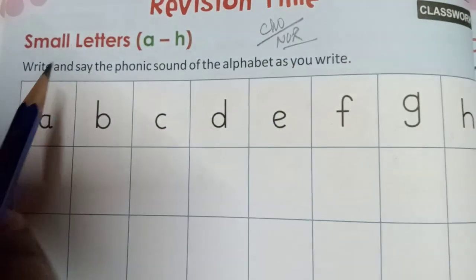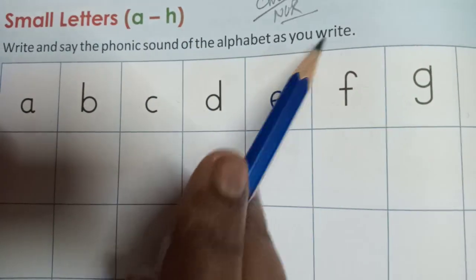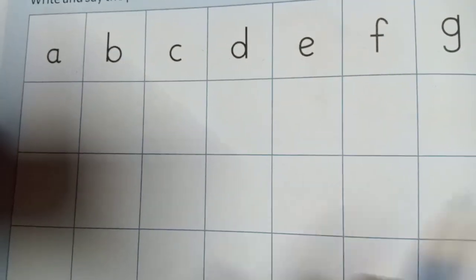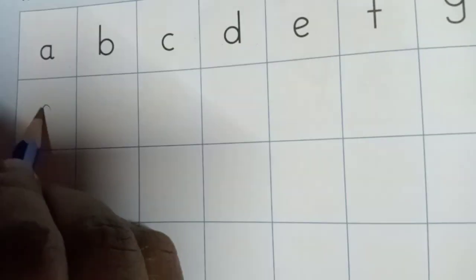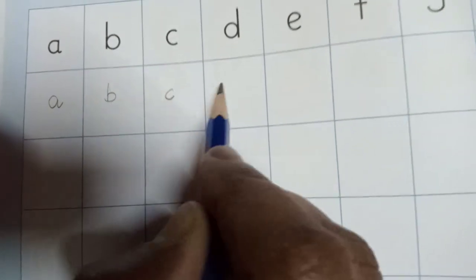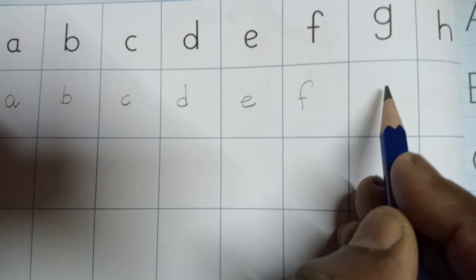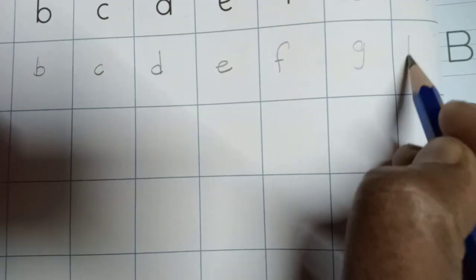This is your classwork. Write and say the phonic sound of the alphabet as you write. Sound them boldly: a, b, c, d, e, f, g, h.